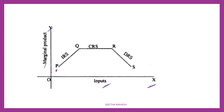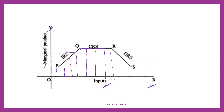From point P to Q, we call it increasing returns to scale. As input increases, if marginal product also increases, this stage is called increasing returns to scale. When the employment of input increases and marginal product decreases, that stage we call decreasing returns to scale.